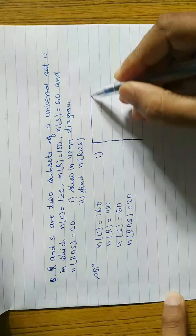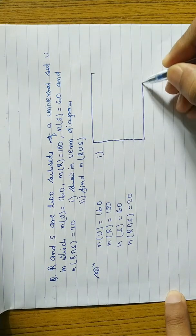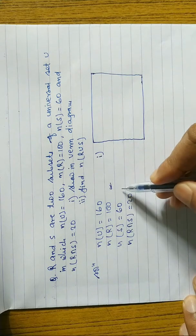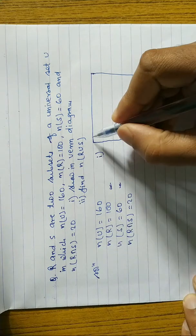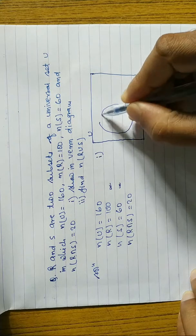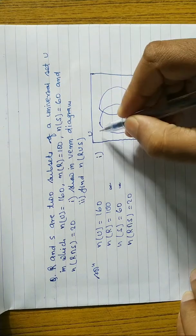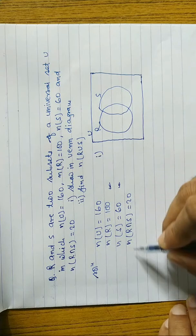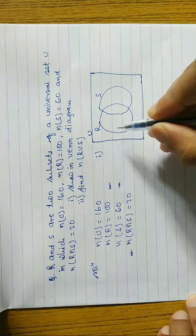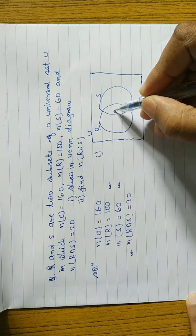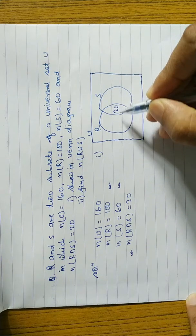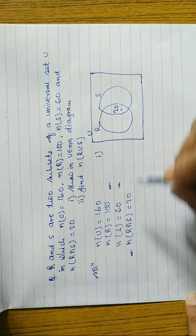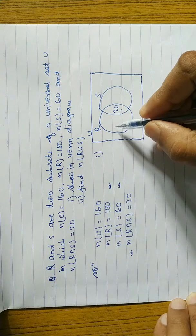In number one, let's draw the diagram. We have two sets R and S. The universal set is represented by a rectangular box. We write R and S inside. The common part — n(R∩S) means common — this 20 belongs to R also and S also, so we write 20 in the middle. This part is the intersection, which is common.